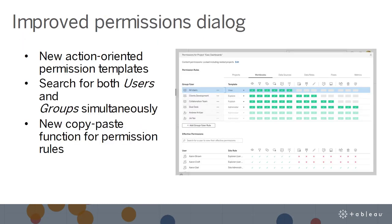Finally, we improved the permissions dialog. With a major update to the permissions dialog, you'll be able to set up permissions for users and groups faster and easier than ever before. Updates include new action-oriented permission templates, the ability to search both users and groups simultaneously without pre-selecting your choice, and a new copy-paste function for permission rules. All of these updates are wrapped in a more intuitive user experience with stylistic refinements.